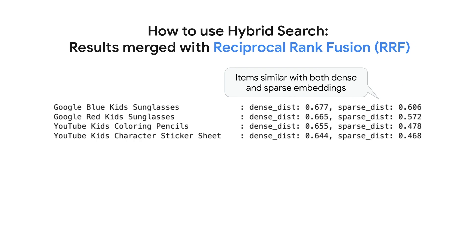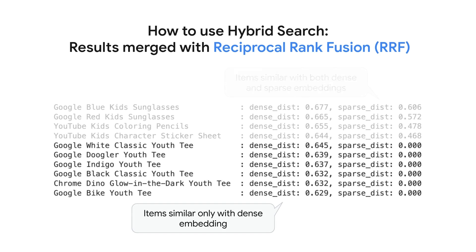As you can see, items with higher similarity for both dense and sparse embeddings appear at the top of the list, such as 'Google Blue Kids Sunglasses'. Items similar to either the dense or sparse embeddings follow after them. For example, 'Google White Classic Youth Tee' is ranked in the middle because, while it doesn't contain the keyword 'kids', the term 'youth tee' is semantically similar enough to be included in the results. To combine the results of semantic and token-based searches, Vector Search employs an algorithm called Reciprocal Rank Fusion.